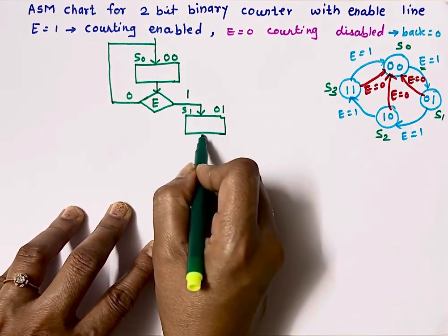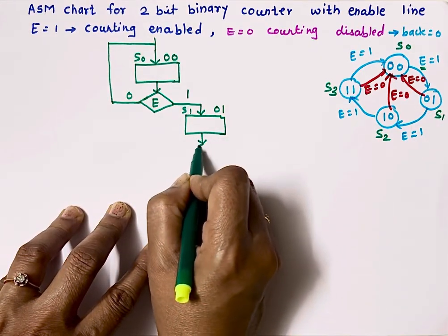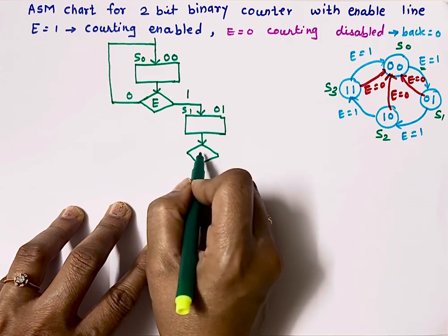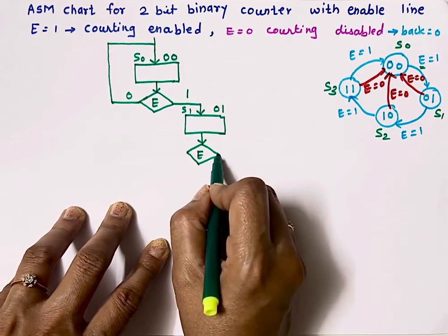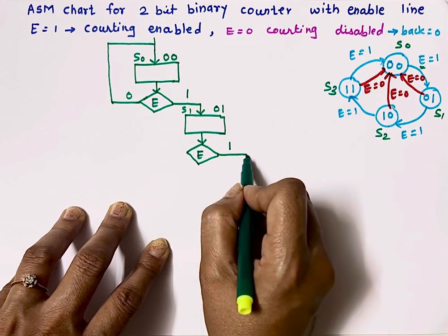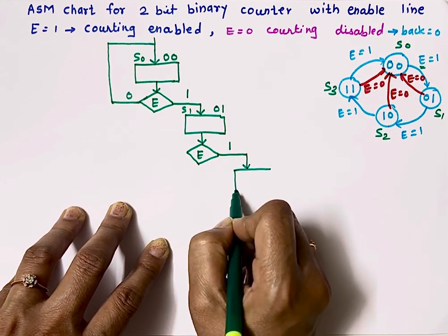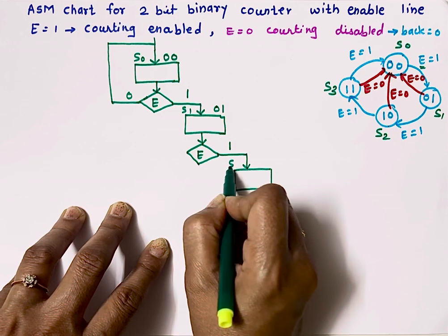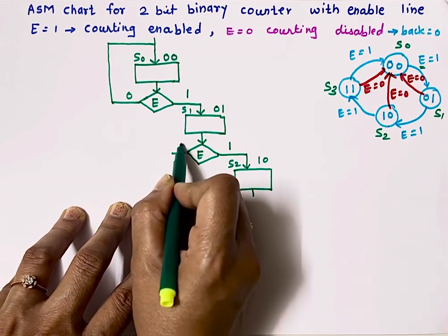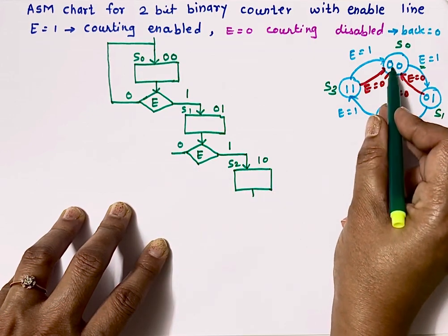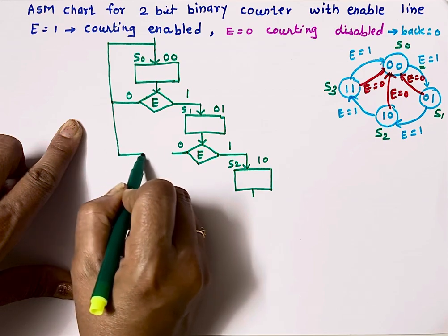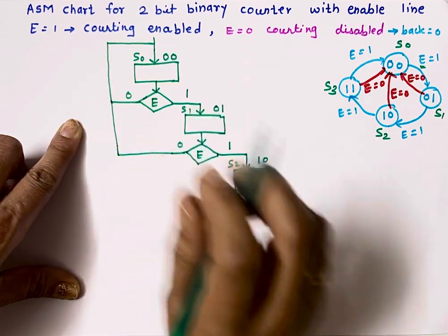Now I am in state S1. I'll draw one decision box here; the decision is based on the enable input. If E equals 1, it will go to state S2 with binary equivalent 10. But if E equals 0, it will go back to state 00.